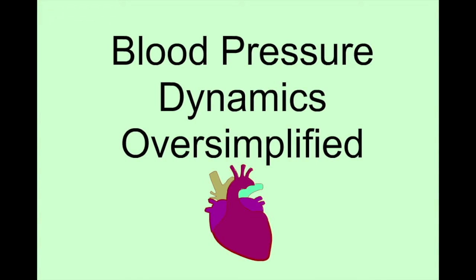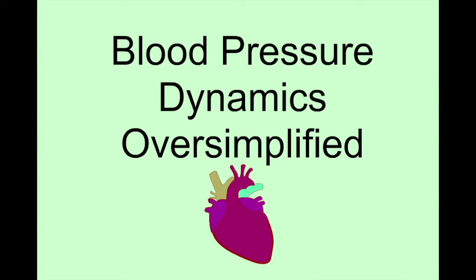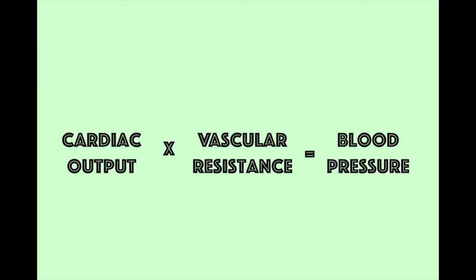A lot of people are quite nervous about anything cardiac, and that's understandable — if something goes wrong with the heart then the consequences can be fairly catastrophic. However, the basics of blood pressure are actually fairly easy, as almost everything can be described with one simple equation: cardiac output times vascular resistance equals blood pressure. This video will hopefully provide a simple model for understanding blood pressure dynamics.